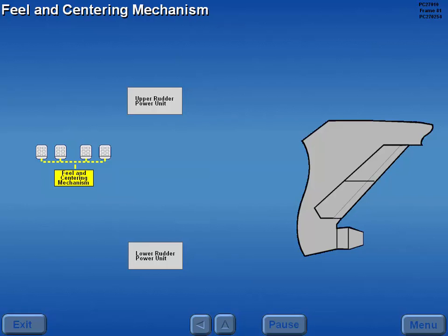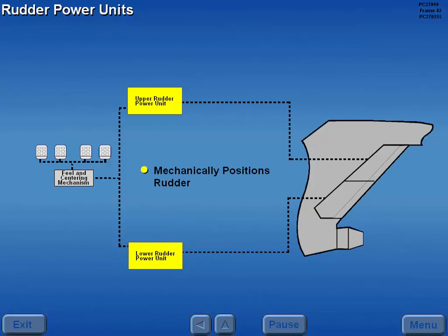Rudder pedal inputs are mechanically transmitted through the rudder feel and centering mechanism to the rudder power units. The rudder power units use hydraulic pressure to mechanically position the rudders. The lower unit is powered by hydraulic system A and the upper unit is powered by hydraulic system B.